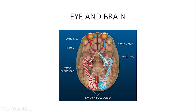In continuation, you have the lateral geniculate nucleus of the thalamus. And apart from that, in continuation, you have the optic radiations. We have superior optic radiations which traverse through the parietal lobe of the brain, and the inferior optic radiations which traverse through the temporal lobe of the brain.